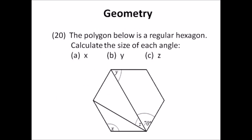Number twenty: geometry. The polygon shown is a regular hexagon — remember what 'regular' means. Calculate the size of each angle and find x, y, and z. Find x first, then y, then z — that's the easiest order. Alternatively, find x, then z, then y. Whatever order you're comfortable with is fine, just make sure you can work it out.